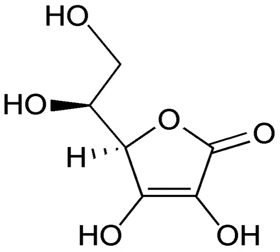Substances that have the ability to oxidize other substances — causing them to lose electrons — are said to be oxidative or oxidizing, and are known as oxidizing agents, oxidants, or oxidizers. The oxidant removes electrons from another substance, and is thus itself reduced. And, because it 'accepts' electrons, the oxidizing agent is also called an electron acceptor. Oxygen is the quintessential oxidizer.